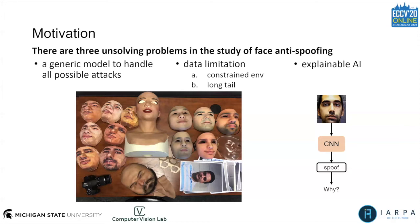Third, most of the previous models are either a live-or-spoof classifier or a live-spoof regressor. We want a model that can explain its own decision, as the spoof cues are not clear even for human understanding.